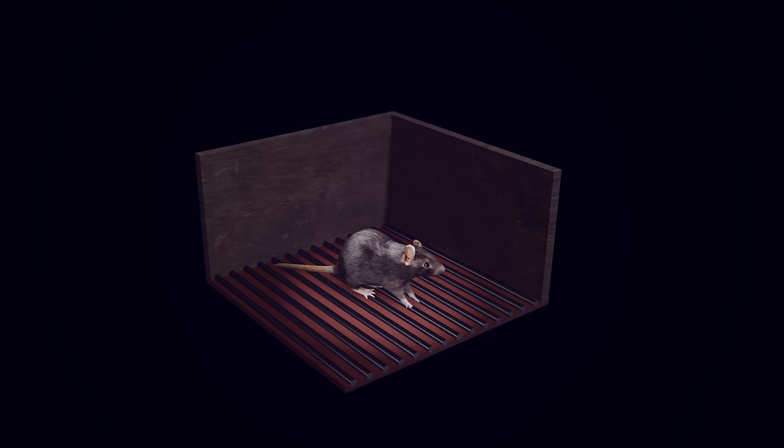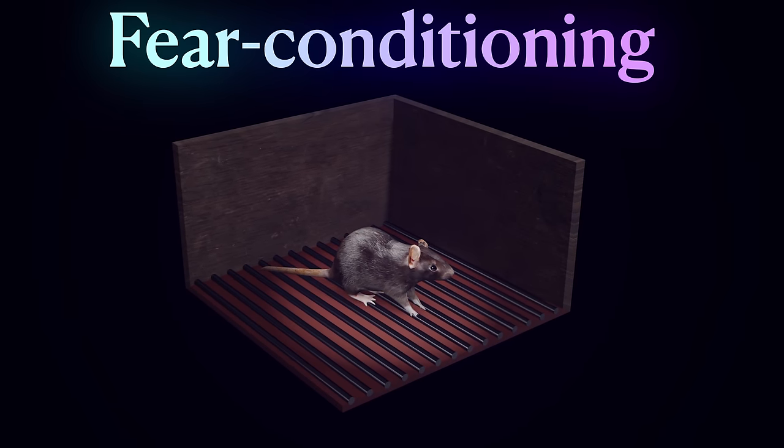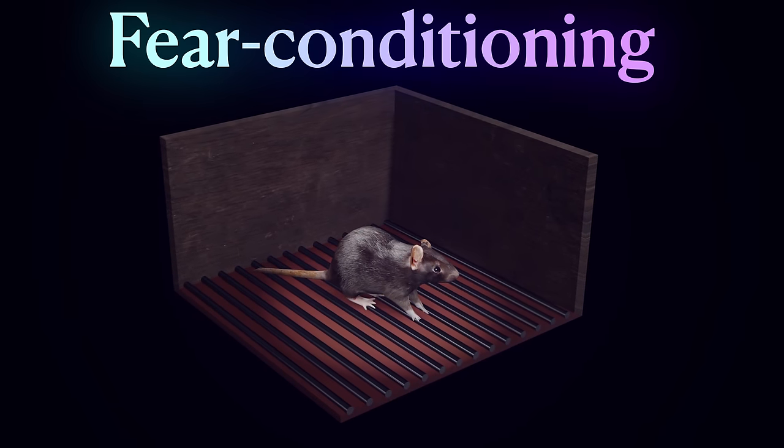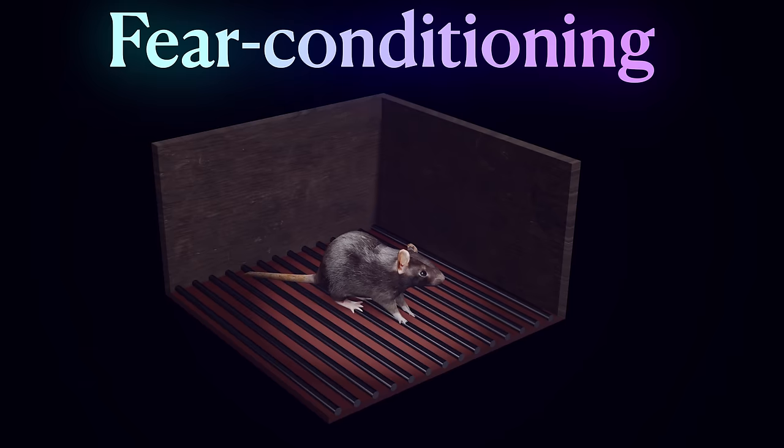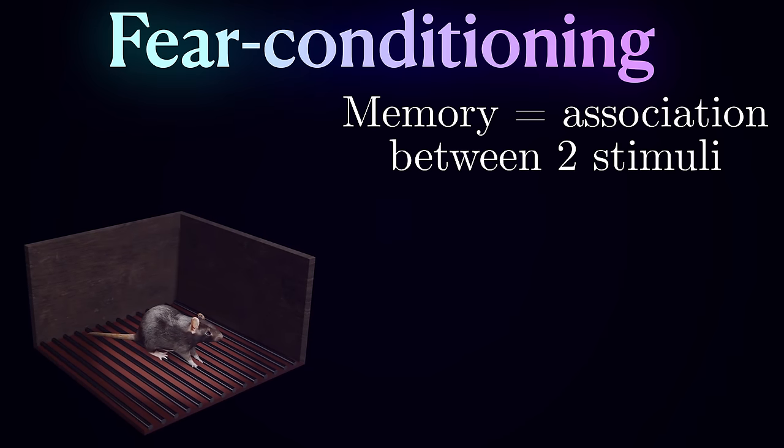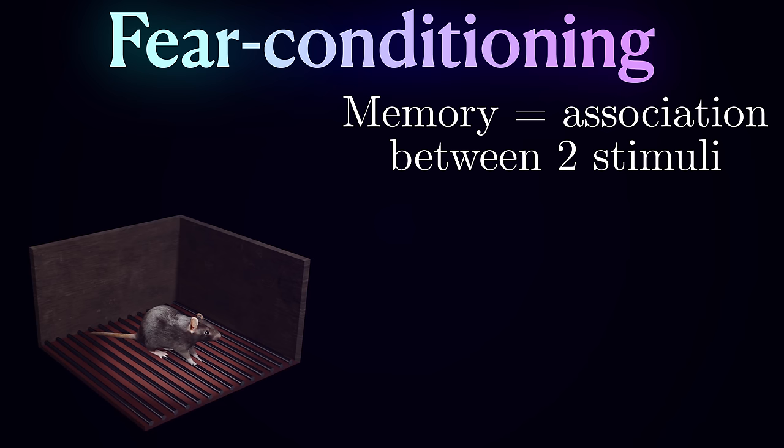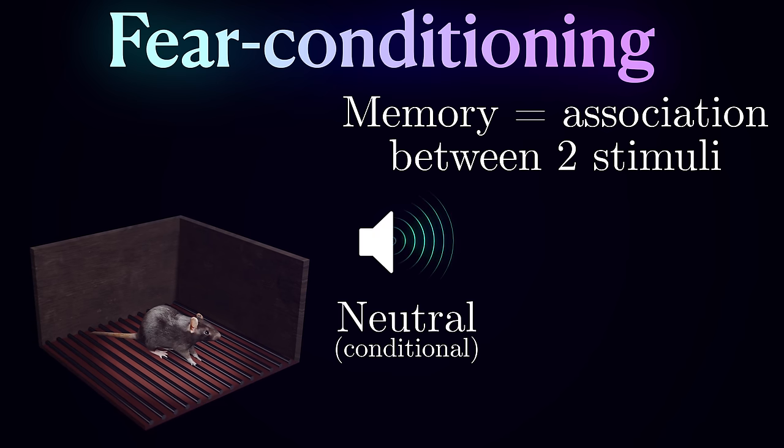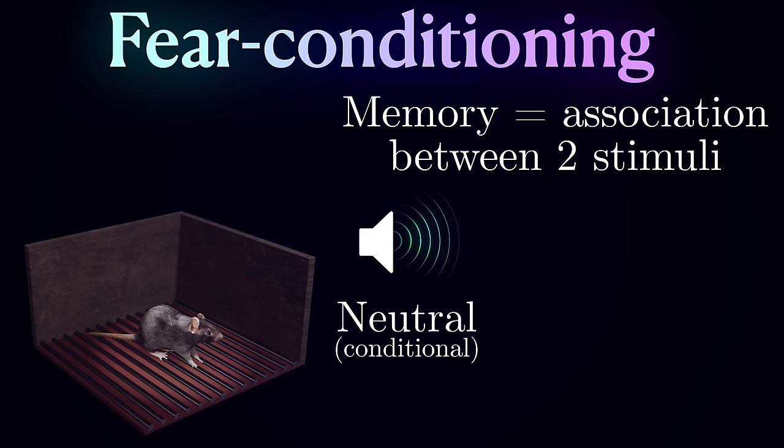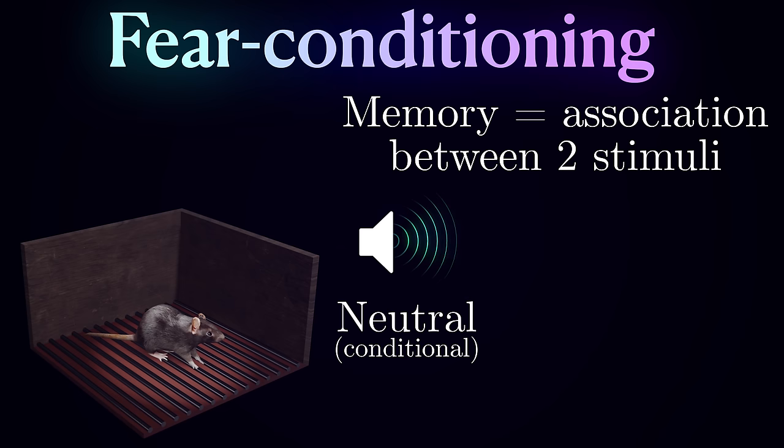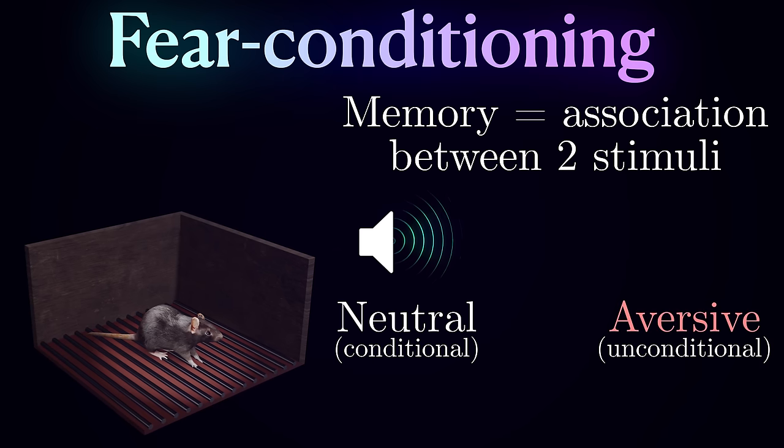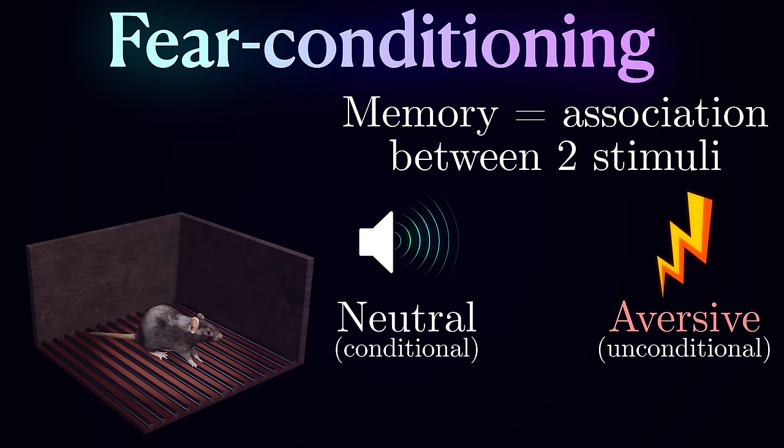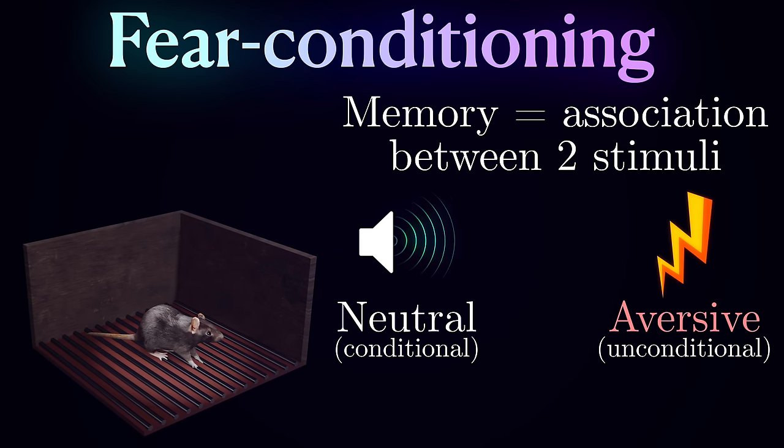One of the most popular setups is called a fear-conditioning paradigm. There are many different variations, but the main idea is that memory is defined as forming an association between two stimuli: a neutral stimulus, also referred to as a conditional one, for example a sound tone or a spatial context, and an aversive stimulus or unconditional, for example a mild foot shock.